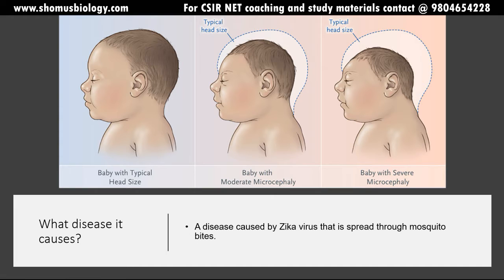Zika virus generally causes Zika virus-mediated fever, but it can affect neonates. Here you can see a baby with a typical head size, and this baby's head size is becoming smaller from the top and back — the proper development of the brain is not possible. Mosquito-borne viral illnesses generally tend to attack the brain, as we saw with Japanese encephalitis — they can reach the brain.